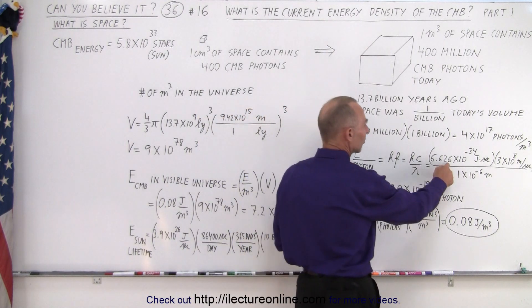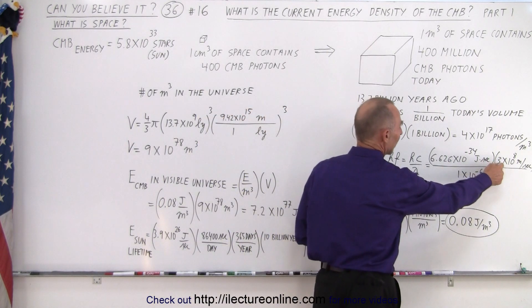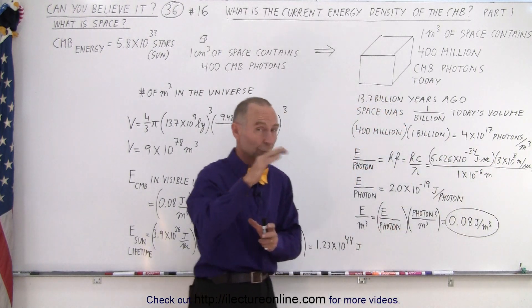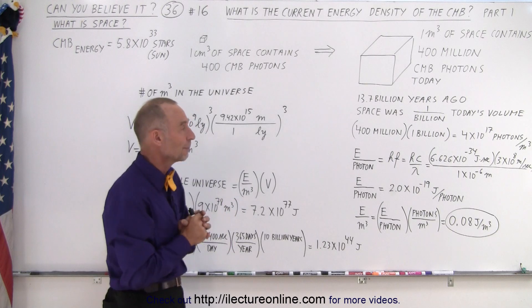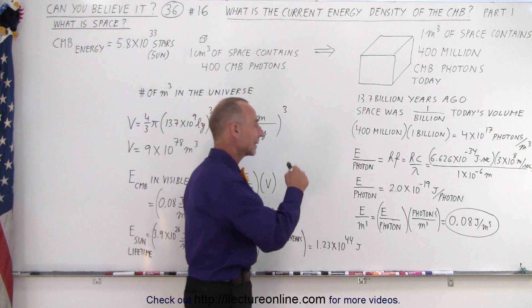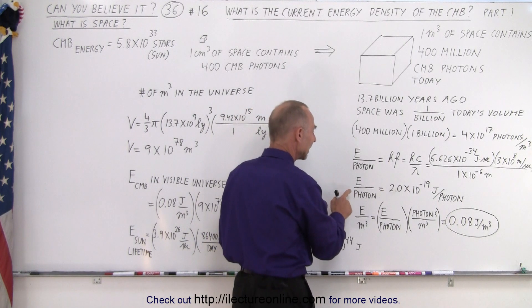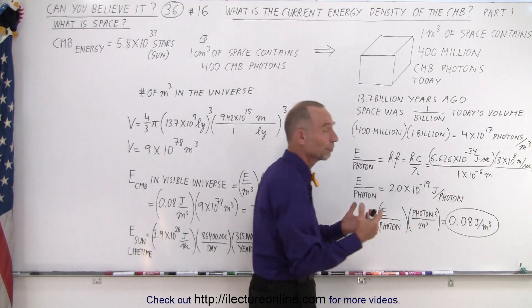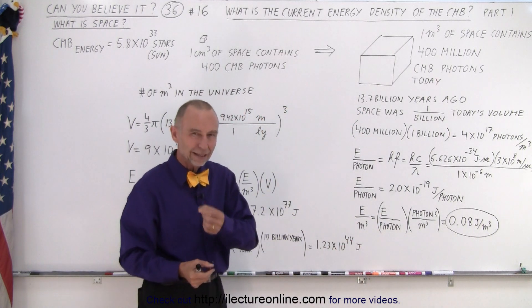So we take Planck's constant, times the speed of light, divided by the wavelength of one of those CMB photons, 13.7 billion years ago, which was approximately a micrometer, 1 times 10 to the minus 6 meters. Which means that back then, each photon contained the energy equivalent of 2 times 10 to the minus 19 joules per photon, which is a little bit less than a light photon.